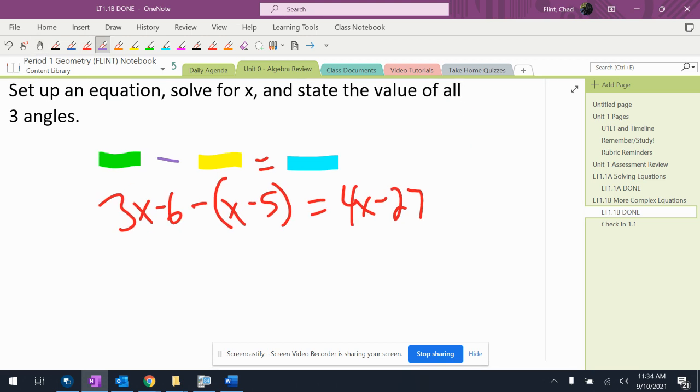Now again, this will probably either happen one time the whole year or never. When I distribute something with a negative out front like that, I have to put a one there and distribute that. So 3x minus 6 minus x plus 5. Negative one times negative five is positive five equals 4x minus 27.